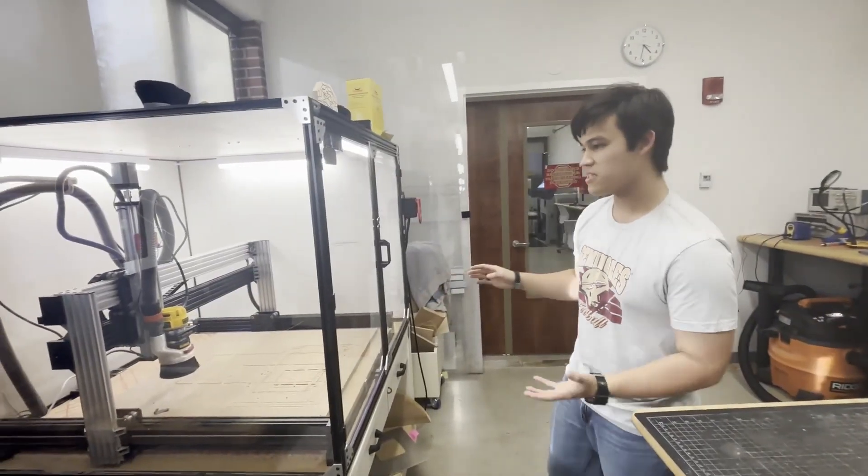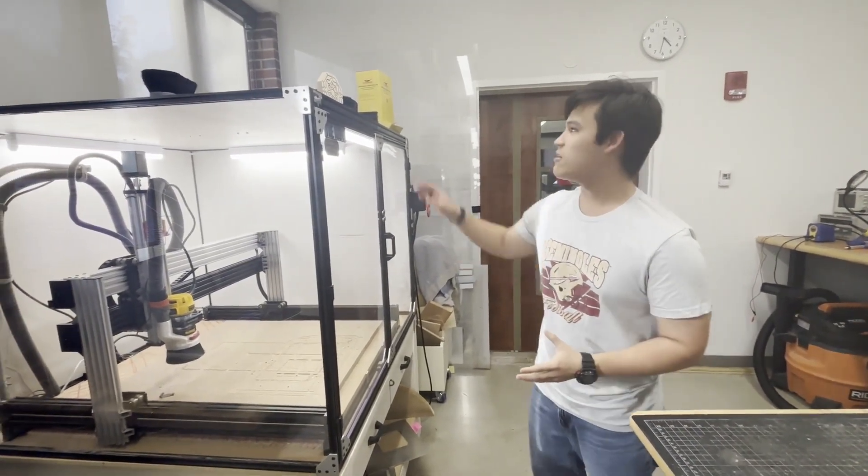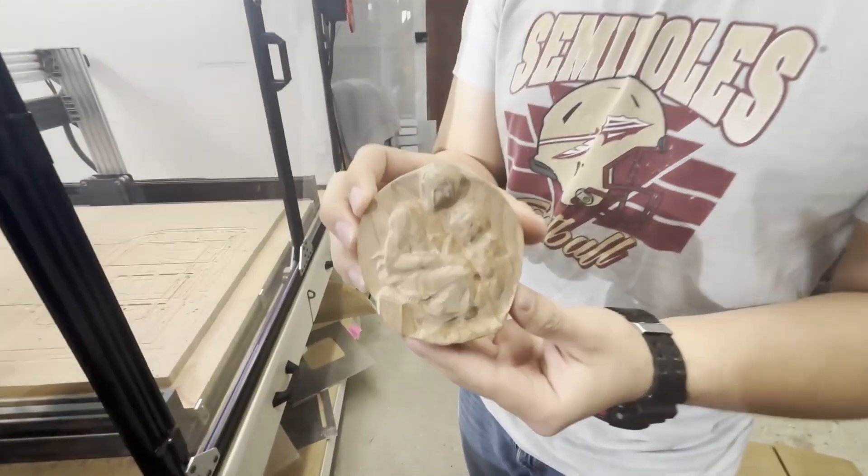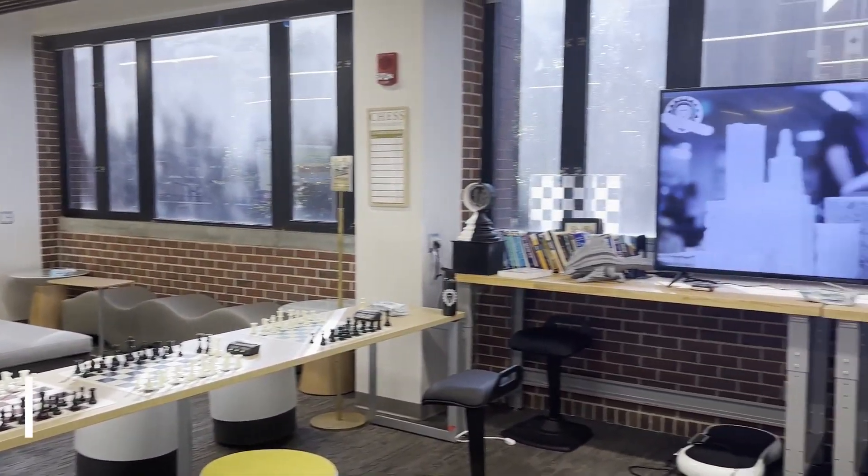Or we have this over here. This is something we actually designed and built from a kit. What we can do is etch into wood and other materials to create really complex designs.